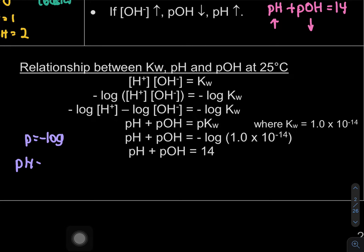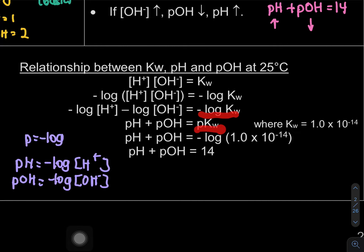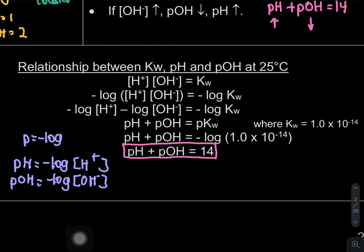Since p means negative log, -log[H⁺] = pH and -log[OH⁻] = pOH. The right side becomes pKw. Since Kw = 1×10⁻¹⁴, pKw = 14. Therefore pH + pOH = 14, which is the relationship we stated earlier.